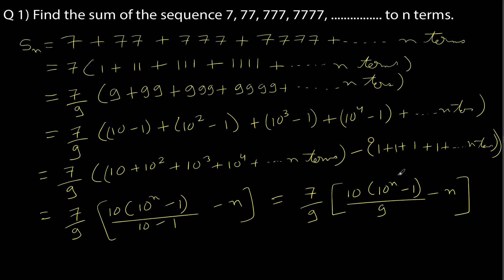So whatever value of n you are given, you can substitute it and get the final answer. This is an example where you need to use a trick to get the terms in the form of a geometric progression, and then use your knowledge of GP to find the answer. Now we have learned many concepts, so practice as many questions as possible from a variety of sources. You will keep finding new types of problems and reach many different exciting conclusions.